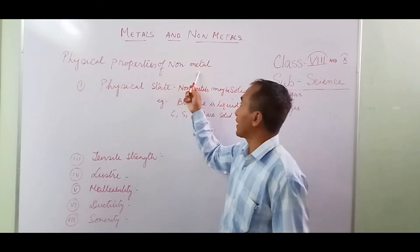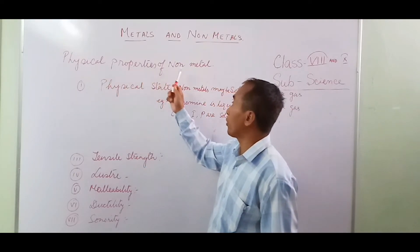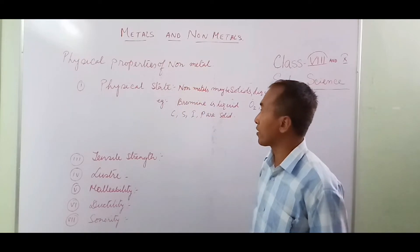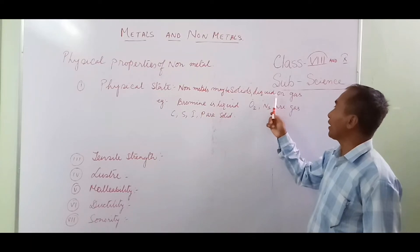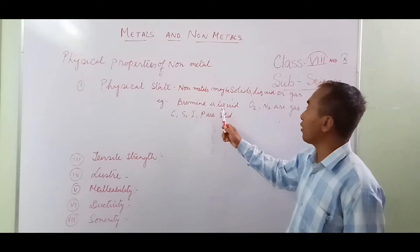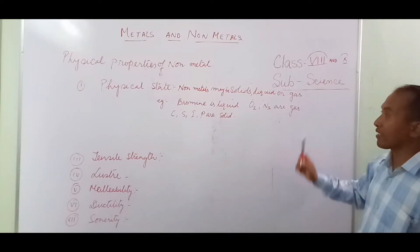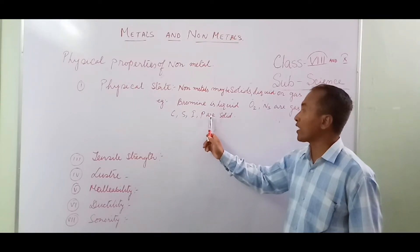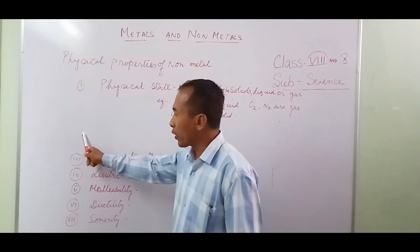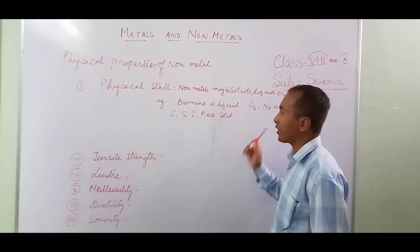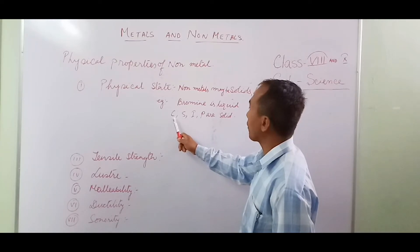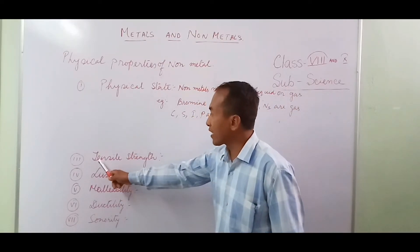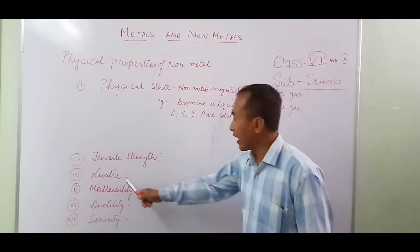When we study the properties of metals, it is very easy to remember the physical properties of non-metals, because they are exactly opposite. The physical state of non-metals may be solid, liquid, or gas. Bromine is a liquid non-metal at room temperature; oxygen and nitrogen are gases. Carbon, sulfur, iodine, and phosphorus are solid at room temperature, but they are very brittle — easily breakable. So tensile strength does not arise for non-metals.